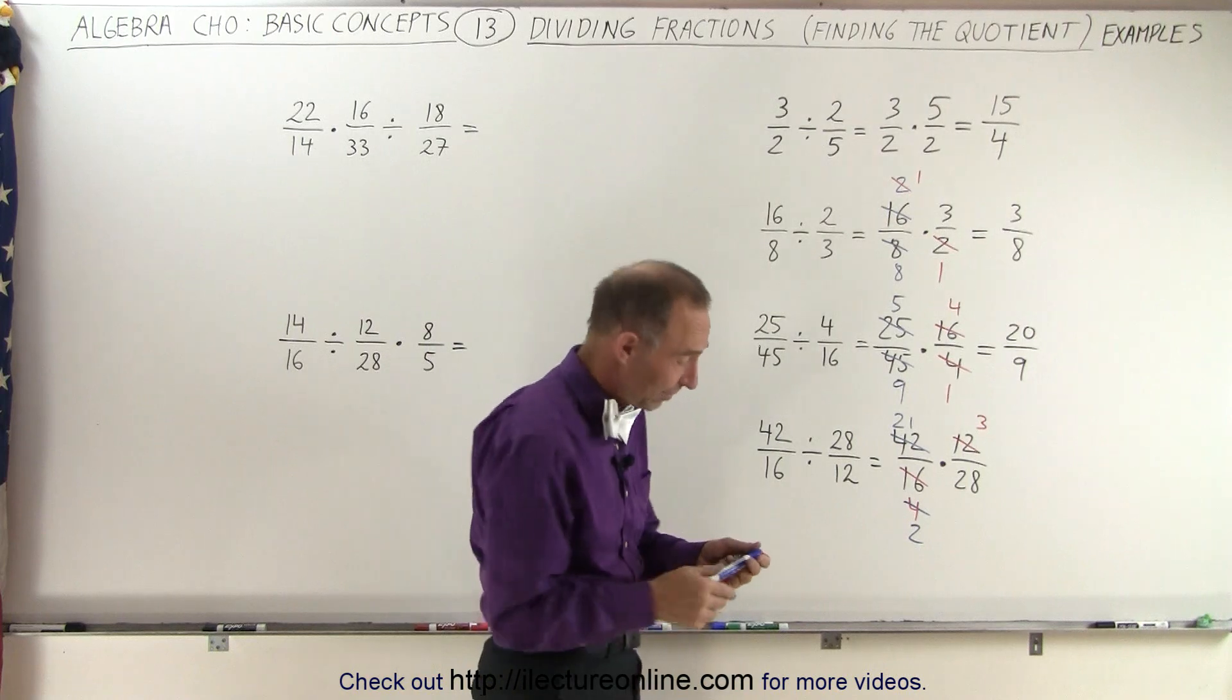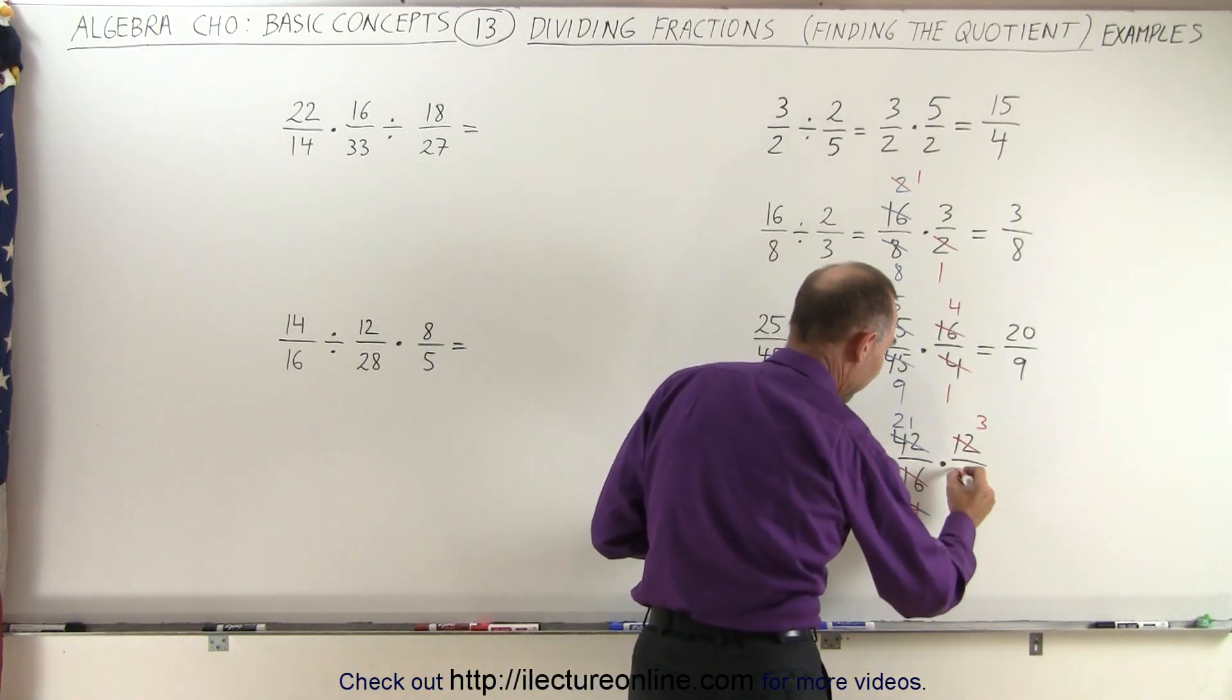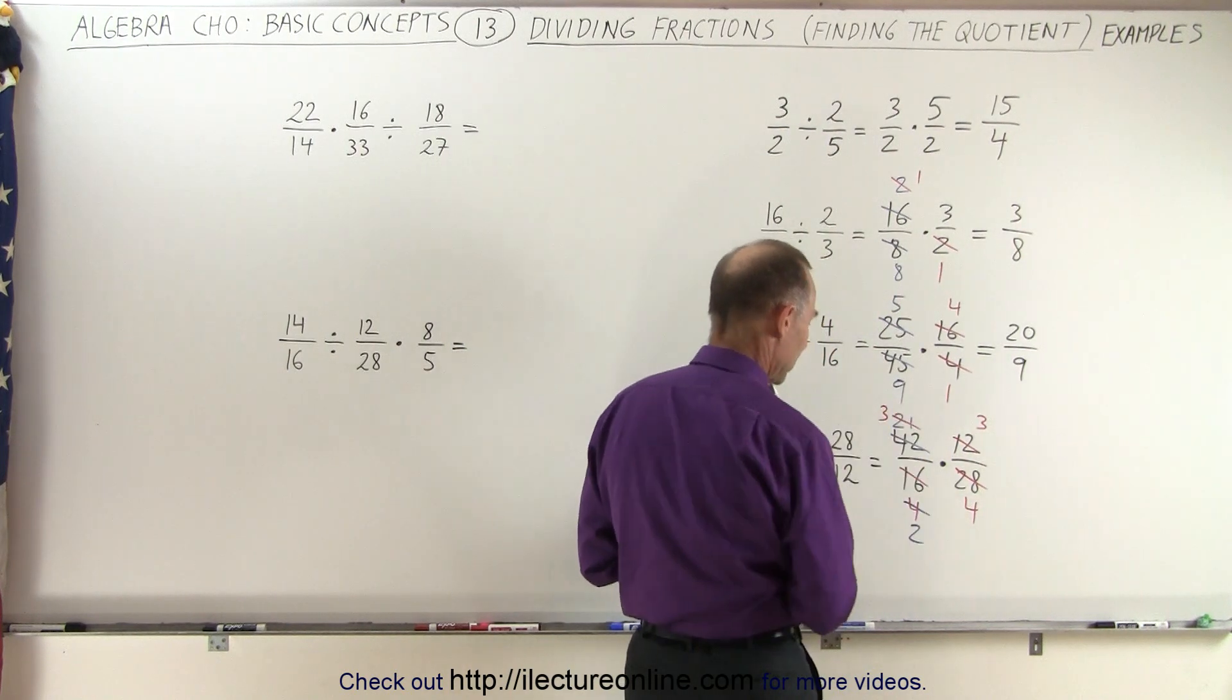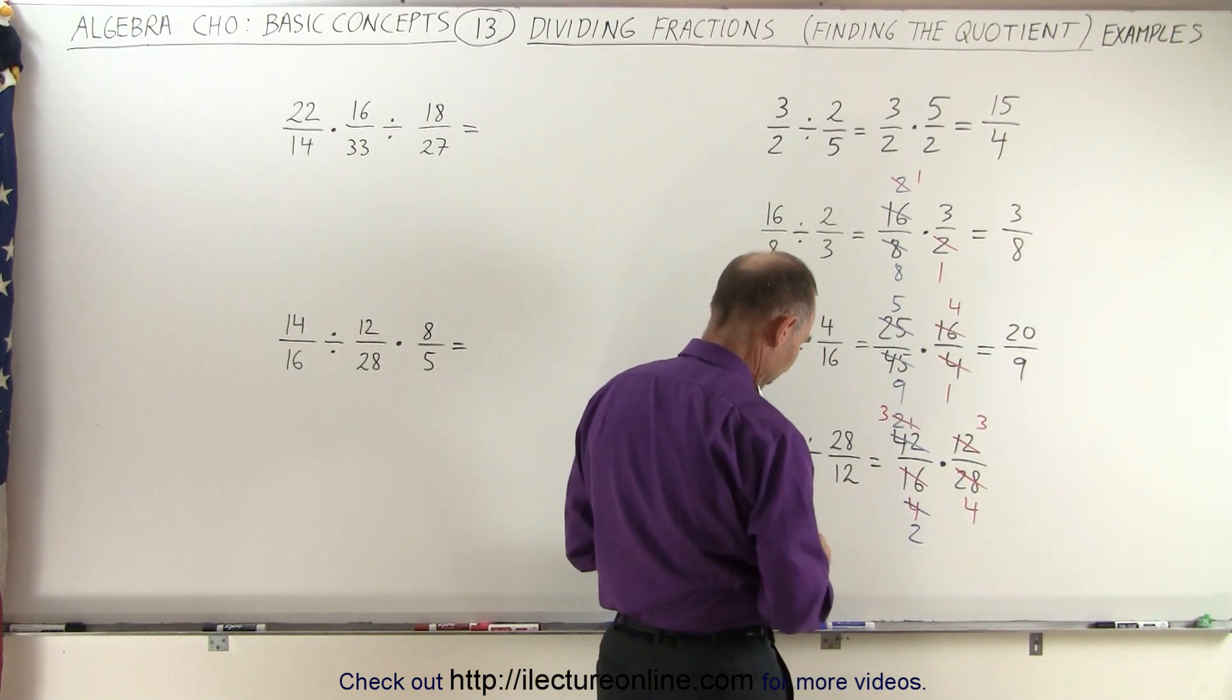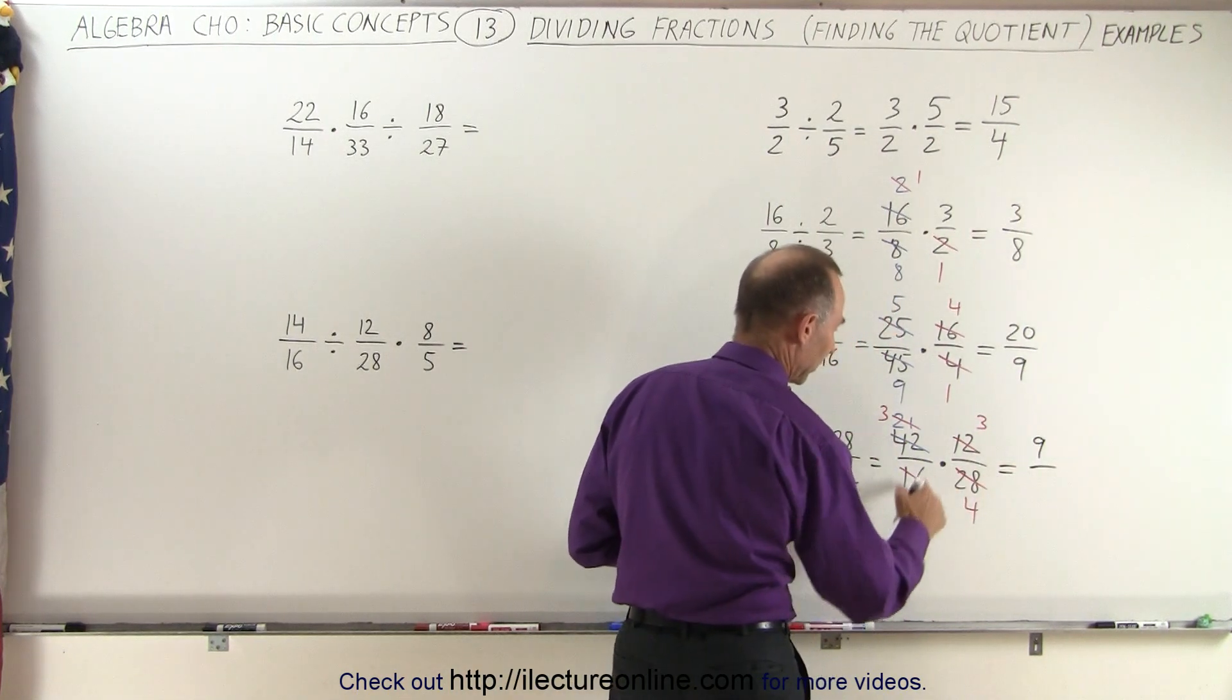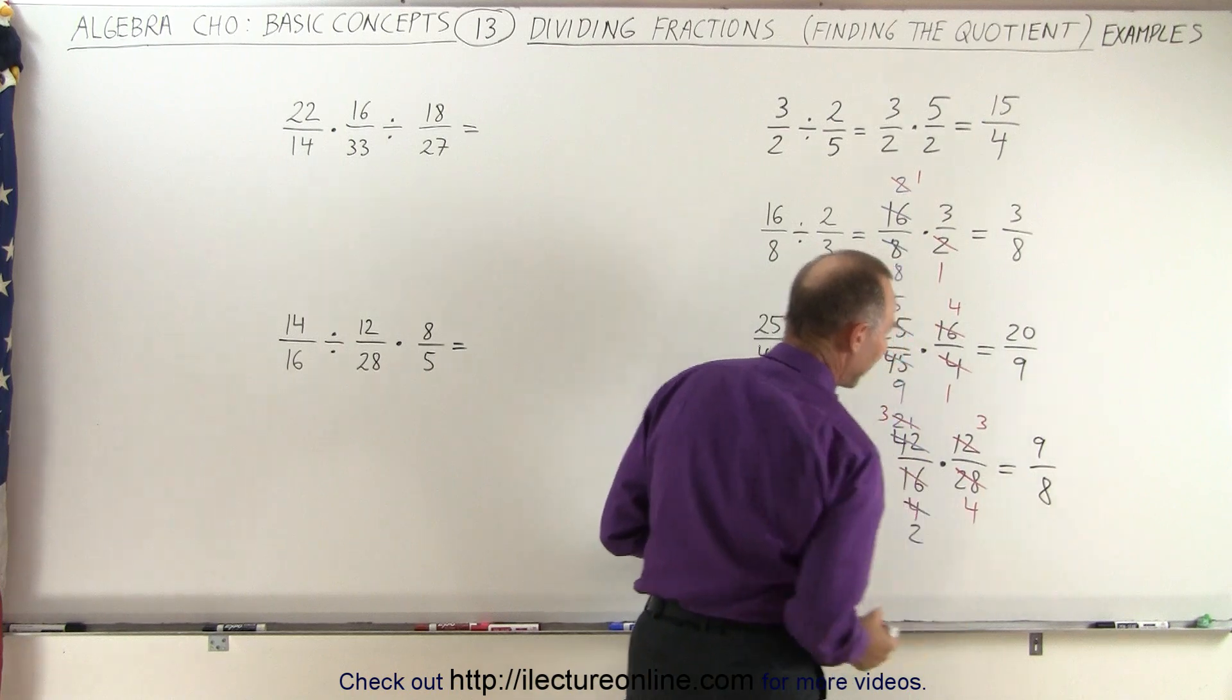Now you notice 21 and 28, they're both divisible by 7. So we can go ahead, divide 28 by 7, that gives us 4, divide 21 by 7, that gives us 3. And now I think we have it as simple as we can make it. So the numerator becomes 3 times 3, which is 9. The denominator becomes 2 times 4, which is 8.